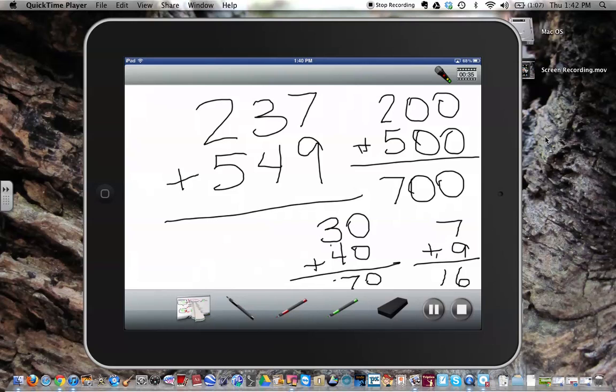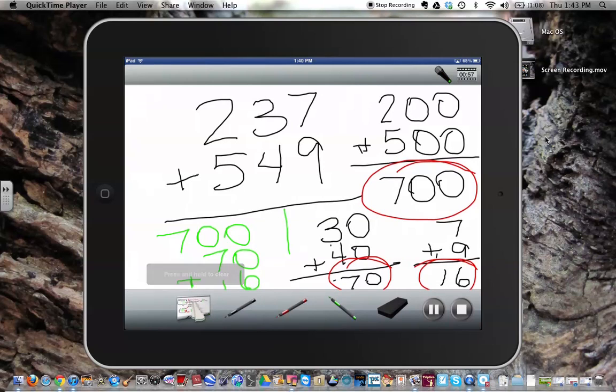Now, I've broken down all of my numbers, and then I am going to add these last ones. So, I'm going to add 700 plus 70 plus 16. So, 700 plus 70 plus 16 gives me a total of 786.